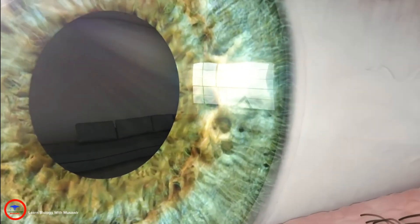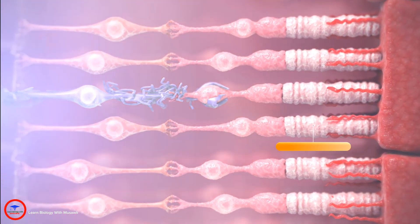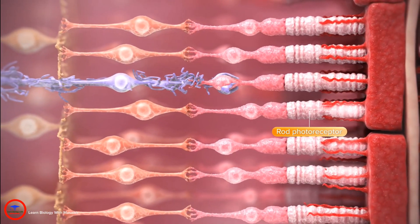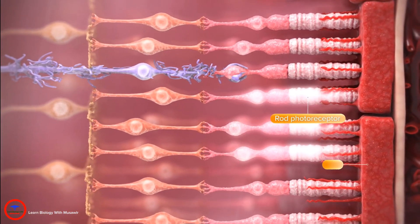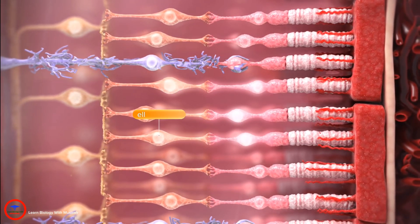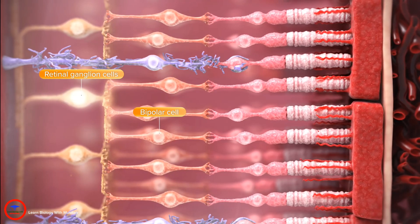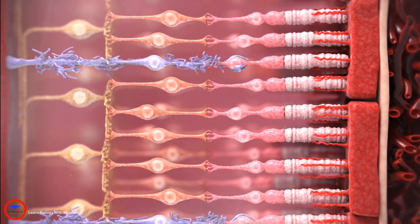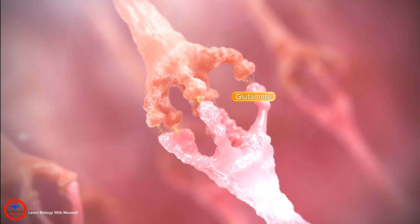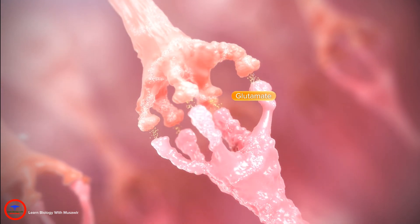In the healthy retina, light is captured by the outer segments of photoreceptors and converted via the phototransduction cascade into a change in membrane potential, which is transmitted through bipolar and retinal ganglion cells to the brain. The signal is passed between cells via synapses using the neurotransmitter glutamate.